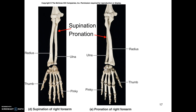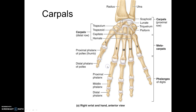After pronation and supination, we move into the hand, starting with the carpals. There are eight carpals. The scaphoid, lunate, and triquetrum form an articulation with the articular surface of the radius, called the radiocarpal joint.